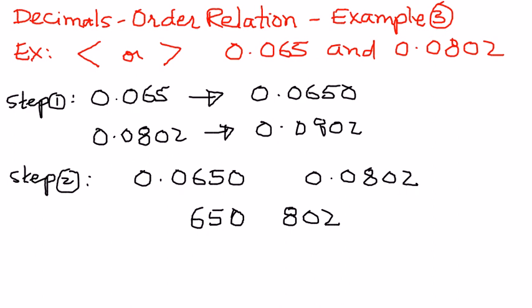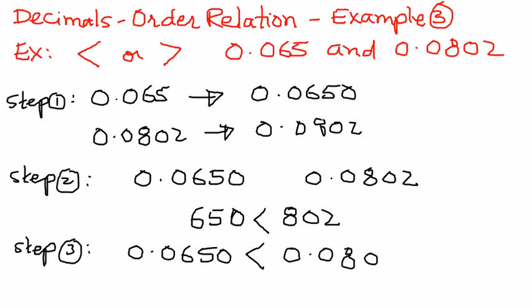In here, 650 is less than 802, and 0.0650 is less than 0.0802. And this is the way we want to find the order relation between two decimal numbers.